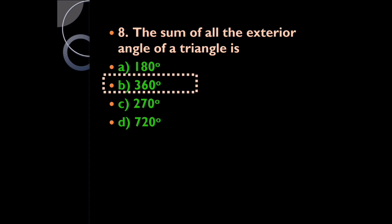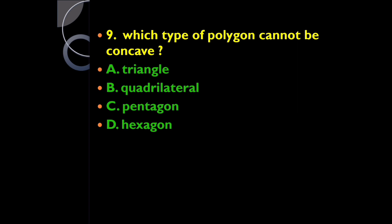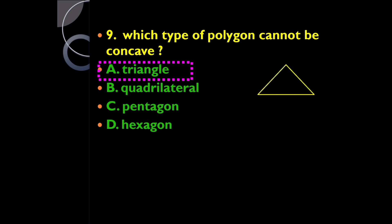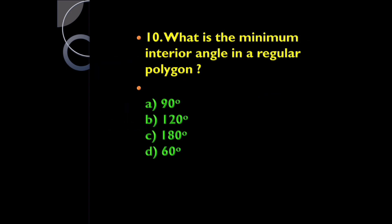The exterior angle sum of any polygon is fixed at 360 degrees. Question nine: which type of polygon cannot be concave? It is a triangle, because the angle sum of a triangle is 180 degrees, but in a concave polygon at least one interior angle must be greater than 180 degrees, so it is not possible in the case of a triangle.